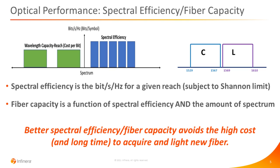A third metric for optical performance is spectral efficiency and its close friend, fiber capacity. With wavelength capacity reach, we're trying to get the most capacity out of a coherent transceiver, which drives down cost, power, and space. With spectral efficiency, you're trying to get the most bits per second out of each hertz of spectrum — you can have high spectral efficiency and low wavelength capacity, or vice versa. Spectral efficiency is the bits per second per hertz for a given reach, and that's subject to the Shannon limit — you can't get better spectral efficiency than the Shannon limit.